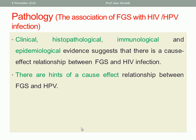We should know an important thing: the association of Female Genital Schistosomiasis with HIV and the human papillomavirus, because some recent reports address this. There is clinical, histopathological, immunological, and epidemiological evidence suggesting a cause-effect relationship between FGS and HIV infection. There are also hints of a cause-effect relationship between FGS and the human papillomavirus, and many studies are currently running about this.